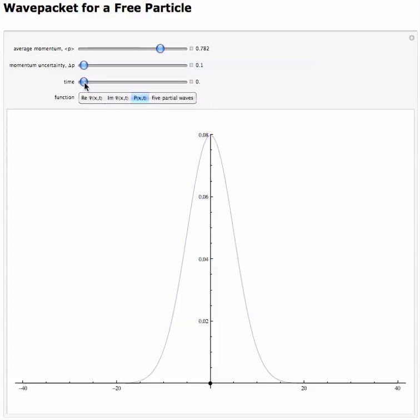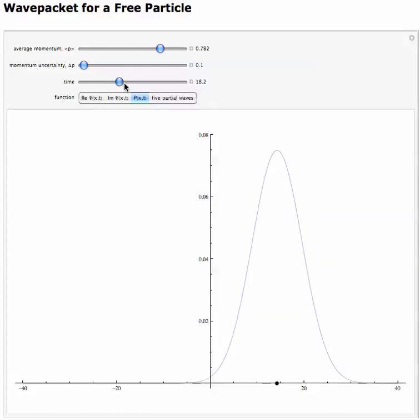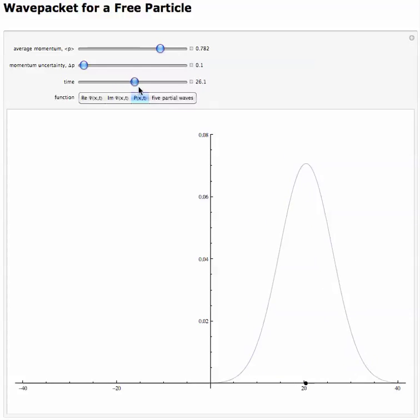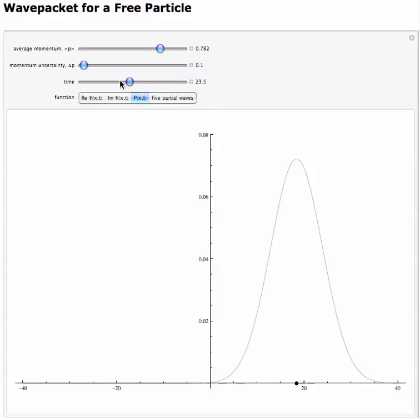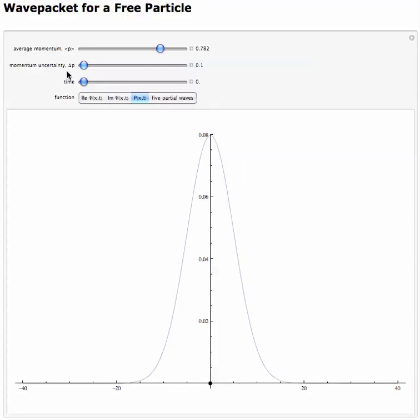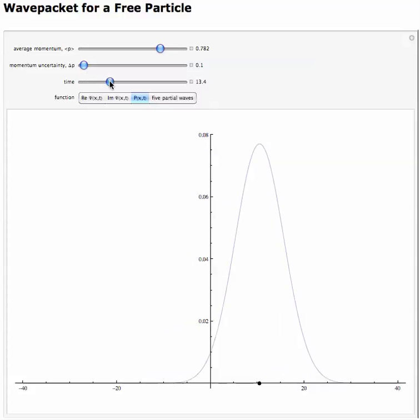And now if we run time, we see that the wave packet moves to the right. And what we also see is that it starts to, it's a little bit hard to tell, but it's starting to get wider. And it's starting to run off the page. And it's also starting to reduce the peak amplitude. It starts off at .08. And you can see that it's actually getting smaller as you move, as you run time.